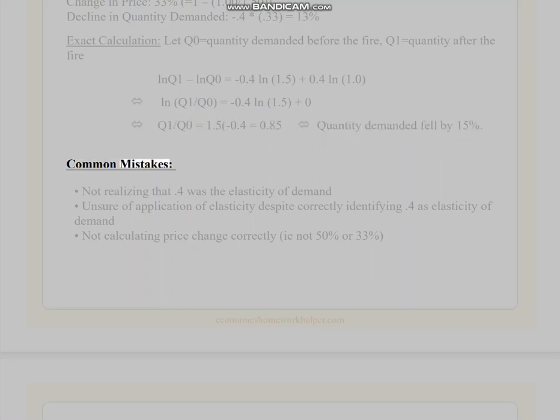Common mistakes: not realizing that 0.4 was the elasticity of demand, unsure of application of elasticity despite correctly identifying 0.4 as elasticity of demand, not calculating price change correctly, i.e. not 50% or 33%.